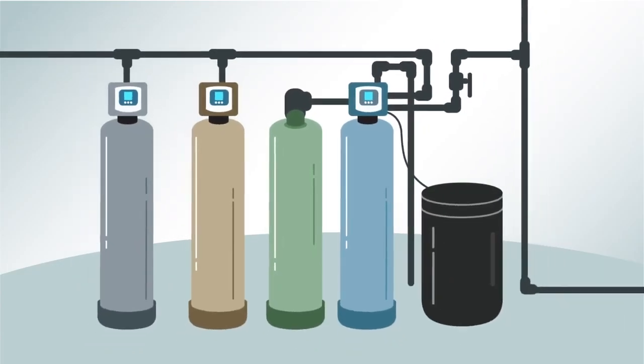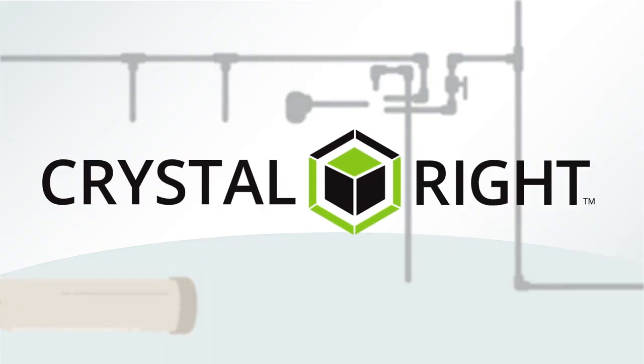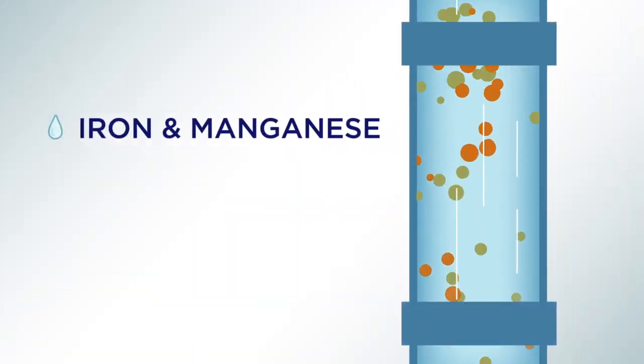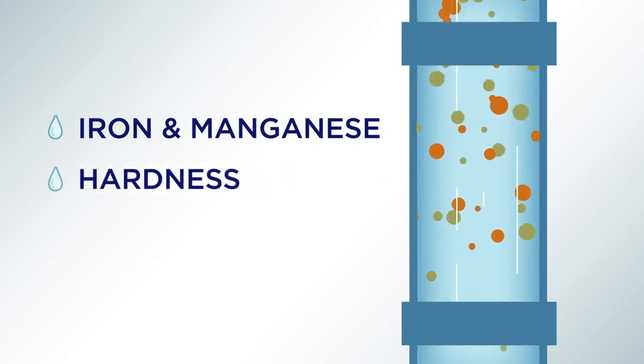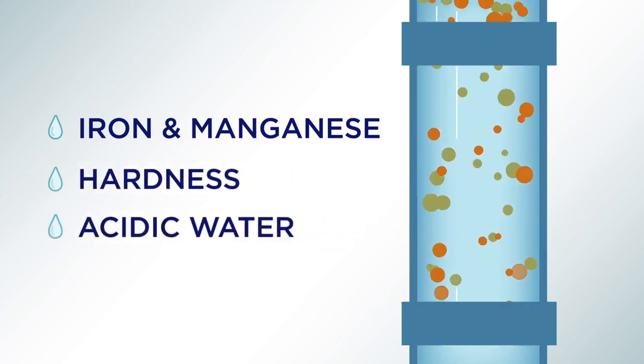You could install equipment for each problem, or you can use the power of CrystalRite. CrystalRite has the ability to remove iron and manganese, reduce hardness, and help neutralize acidic water that causes corrosion, doing three jobs at once.